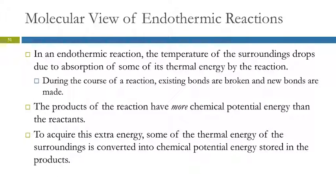Opposite thing is happening during an endothermic reaction. The temperature of the surroundings drops because the reaction is absorbing thermal energy. Again, we have existing bonds being broken, new bonds being formed. But the new bonds are higher in energy. The products now have more chemical potential energy than the reactants did. Where did they get the energy? It came from the surroundings. Thermal energy from the surroundings is absorbed and converted into chemical potential energy that gets stored in the products.